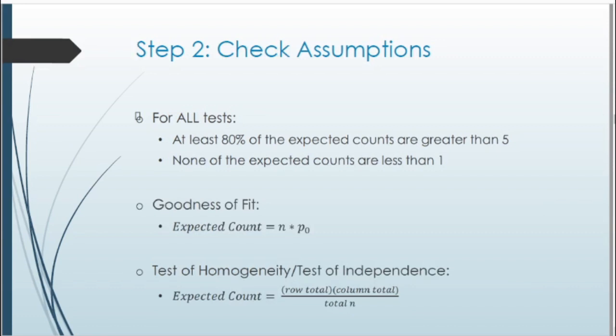For checking assumptions, we mainly need to verify the expected count conditions. For goodness of fit, the expected count equals n times the null proportion. For tests of homogeneity and independence, since data is given in table format, we find expected counts using row total times column total divided by the overall total N.